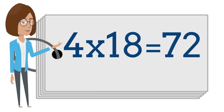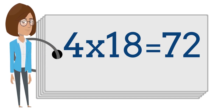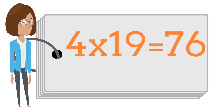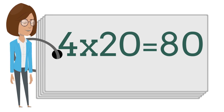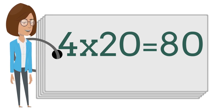4 times 18 is 72. 4 times 19 is 76. 4 times 20 is 80.